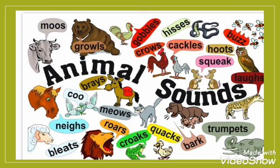Animals make different sounds, which include growling, squawking, squealing, cooing, and rattling. They use these different sounds to identify themselves and communicate with others. Let us play with the animals and the sounds that they make.